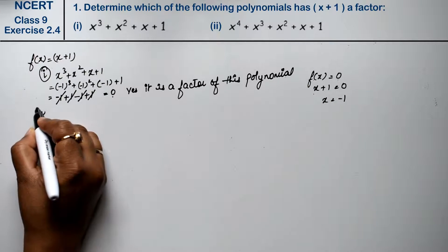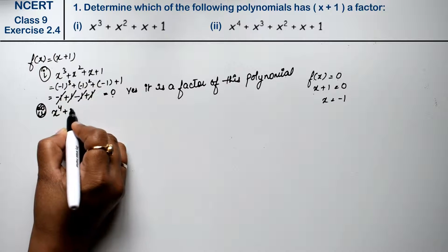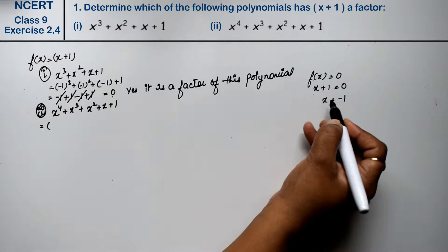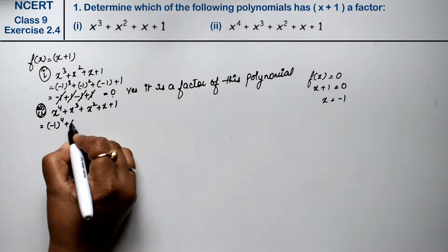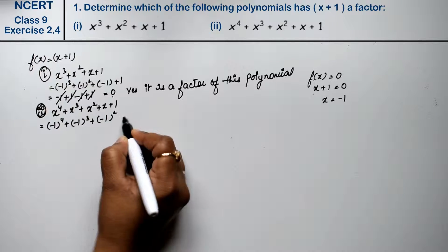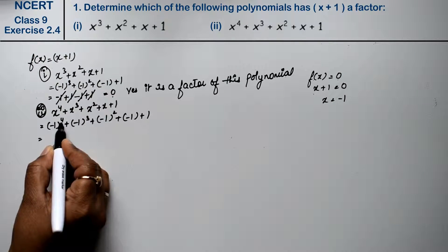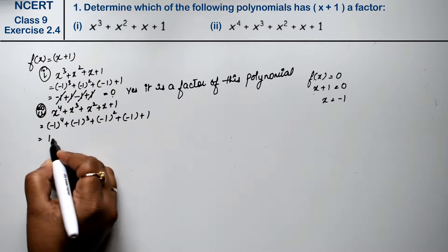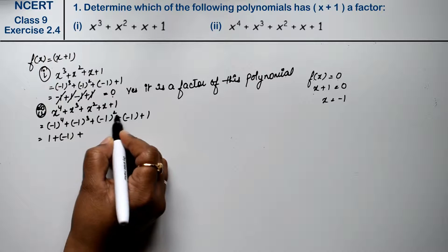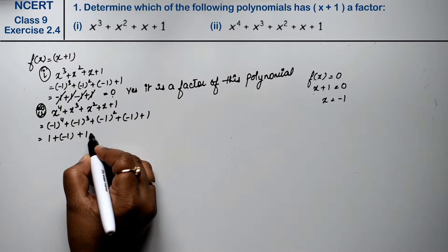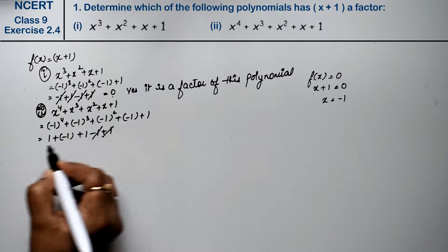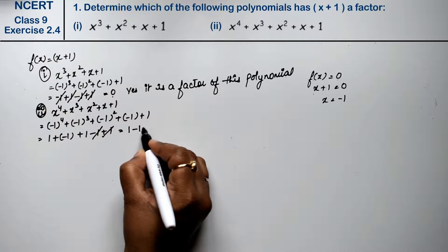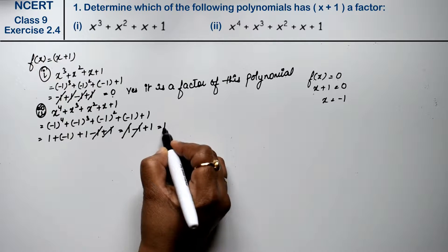Second part: f(x) = x⁴ + x³ + x² + x + 1. Substituting x = -1: (-1)⁴ + (-1)³ + (-1)² + (-1) + 1. Even power gives +1, odd power gives -1. So: 1 - 1 + 1 - 1 + 1 = 1. Since the result is 1, not 0, hence the answer is no — (x+1) is not a factor.